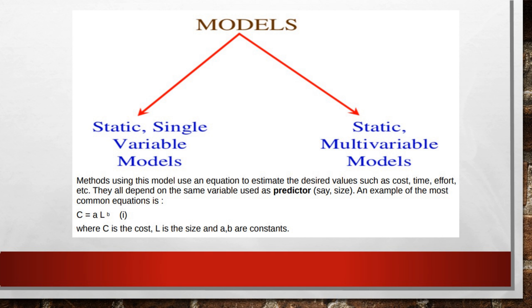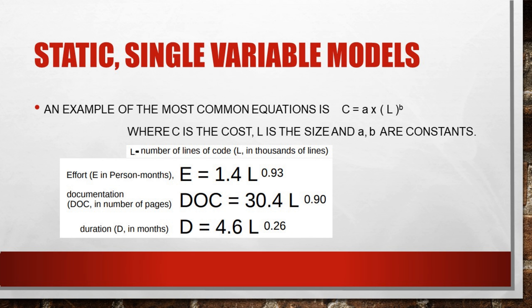The most common equation in both static single variable and static multivariable models takes the form C = A × L^B, where C is the cost estimation, L is the size (lines of code or function points), and A and B are constant values based on either the static single variable or static multivariable model.